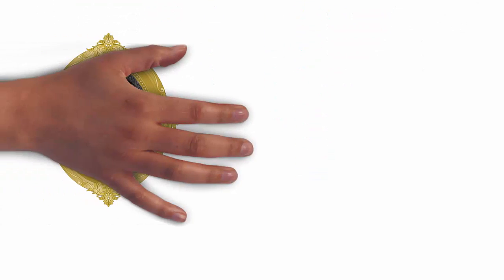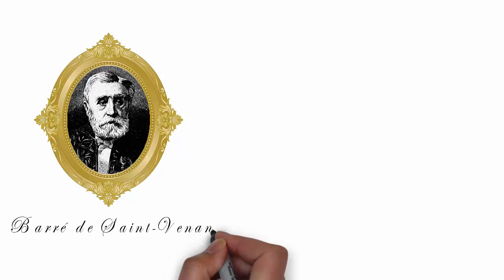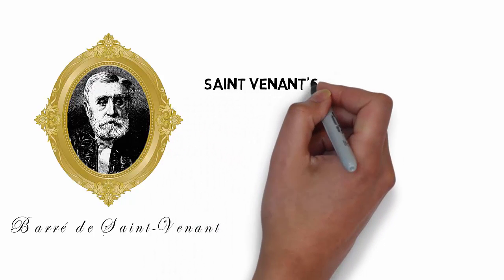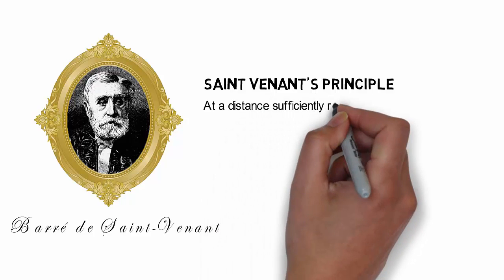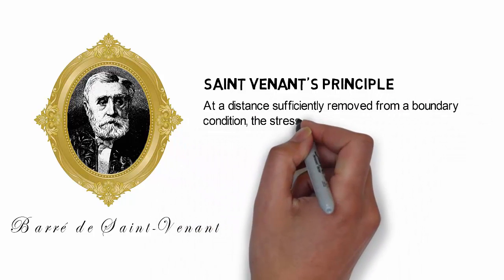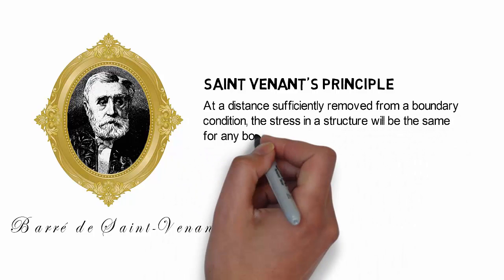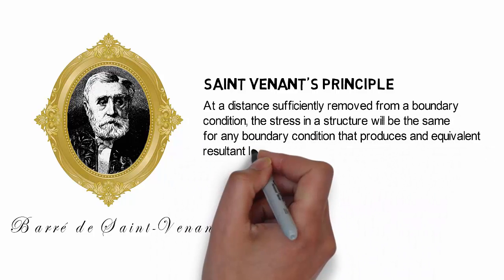First observed by the French scientist Barré de Saint-Venant, this observation is referred to as Saint-Venant's Principle. It states that, at a distance sufficiently removed from a boundary condition, the stress in a structure will be the same for any boundary condition that produces an equivalent resultant load.